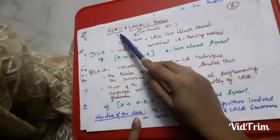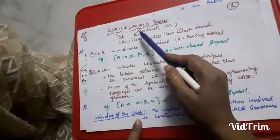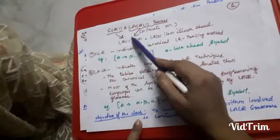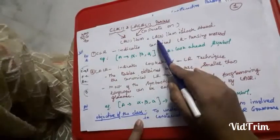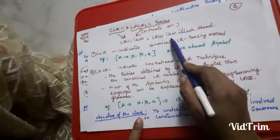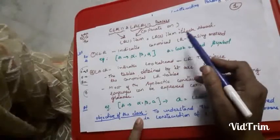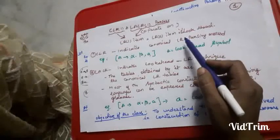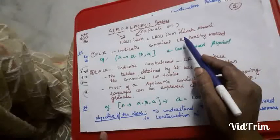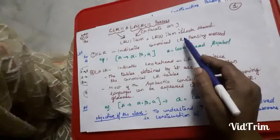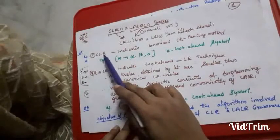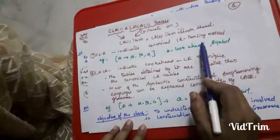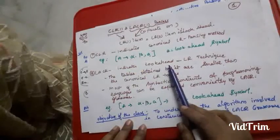These two grammars are related to bottom-up parsing and both make use of LR1 items, meaning they use LR0 grammars plus one look-ahead symbol. The parser reads only one symbol at a time and stores only the next successive element. The full form of CLR is Canonical LR parsing method, and the full form of LALR is Look-Ahead LR technique.